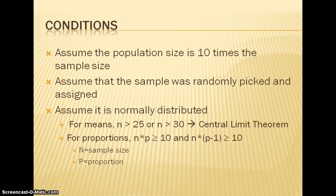Finally, you must assume that the data that you have was normally distributed. For means, if your sample size is greater than 25 or greater than 30, you can assume that your sample is large enough to be normally distributed. That leads to the central limit theorem. For proportions, if n times p and n times (p minus 1) is greater than 10, then you can assume that your data is normally distributed. In this case, n is your sample size and p is the proportion.